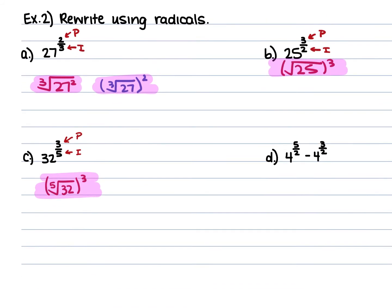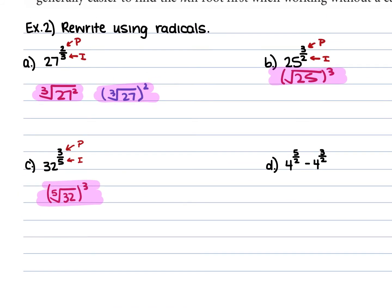For example d, we have 4 to the power of five-halves minus 4 to the power of three-halves. The 5 is your power and the 3 is your power respectively, and the 2 on both is our index. So we get the square root of 4 raised to the fifth power minus the square root of 4 raised to the third power.